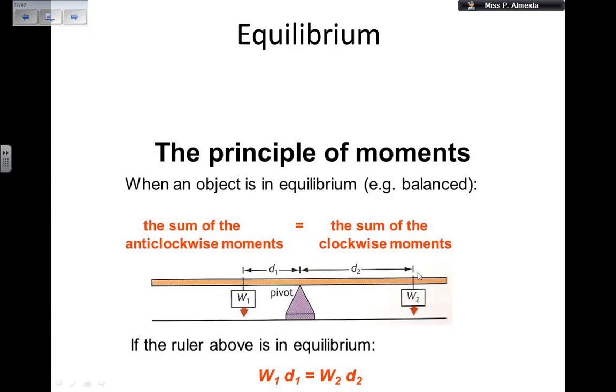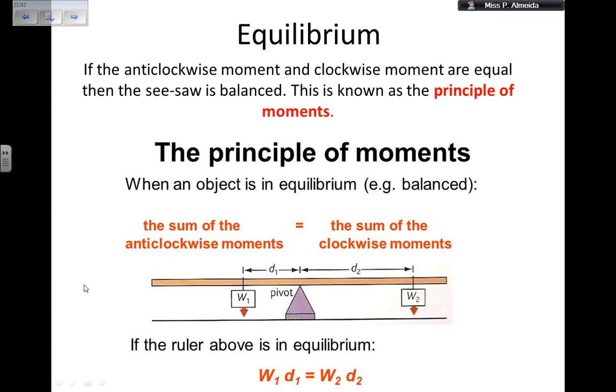I can reach equilibrium if my clockwise moment and my anticlockwise moment are the same value. So if the sum of my anticlockwise moment is equal to the sum of my clockwise moment, my object is balanced, so is at equilibrium. If my W1 times the distance 1 is equal to my W2 times the second distance, so the distance from the second force to the pivot, then my ruler, in this case, is at equilibrium. This particular picture is not mine, I took it from the internet. By definition, if the anticlockwise moment and the clockwise moment are equal, then the seesaw or the ruler is balanced. And this is known as the principle of moments.